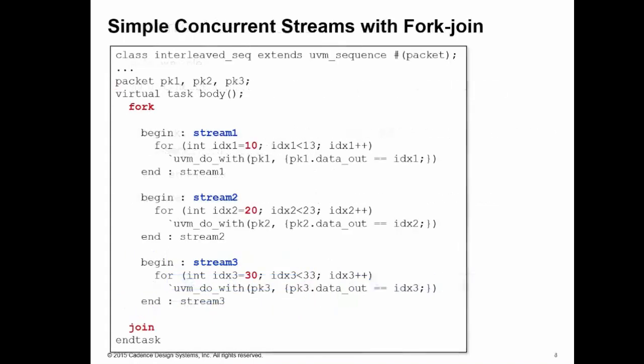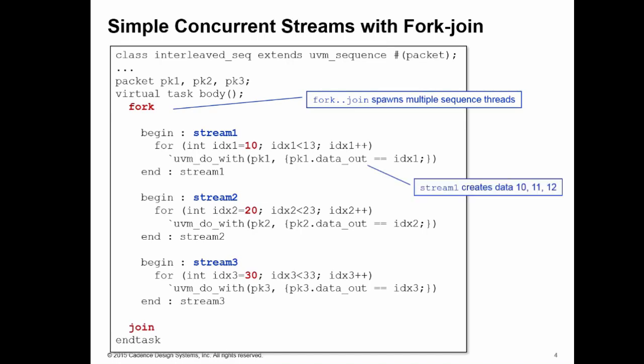Let's have a look at a quick example. Here I have my interleaved sequence that contains a fork join with three blocks. The stream one block creates data starting at 10, stream two creates data starting at 20, and stream three creates data starting at 30. We use simple for loops inside of each block wrapped around a simple do macro in order to create the data.